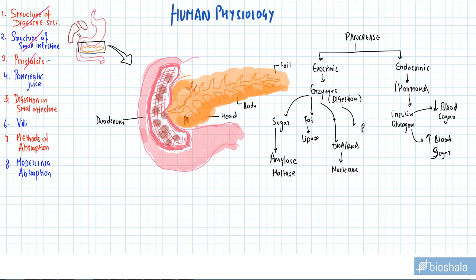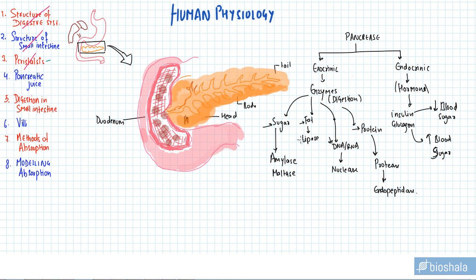For proteins, the pancreas produces proteases, different kinds such as endopeptidases. As you can see, it is able to digest almost each and every biomolecule — that is why the pancreas is called a self-sufficient gland. That covers pancreatic juices, and the next topic will be in our next video.